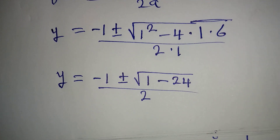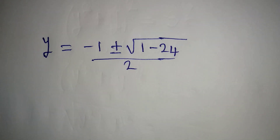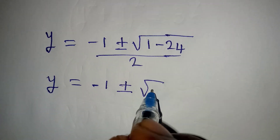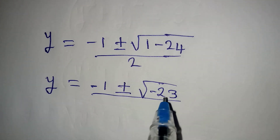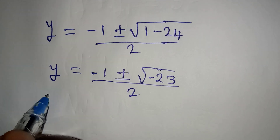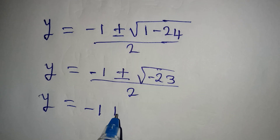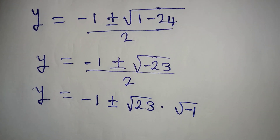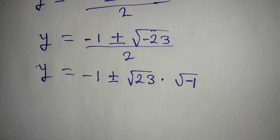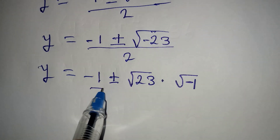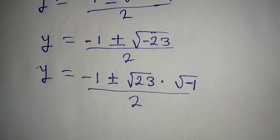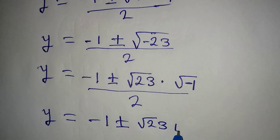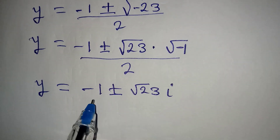So y is equal to -1 ± √(-23), all over 2. To continue, we pick out the negative sign so that we get √23 × √(-1), which gives us √23 × i, since the square root of -1 is i. So y = (-1 ± i√23) / 2.